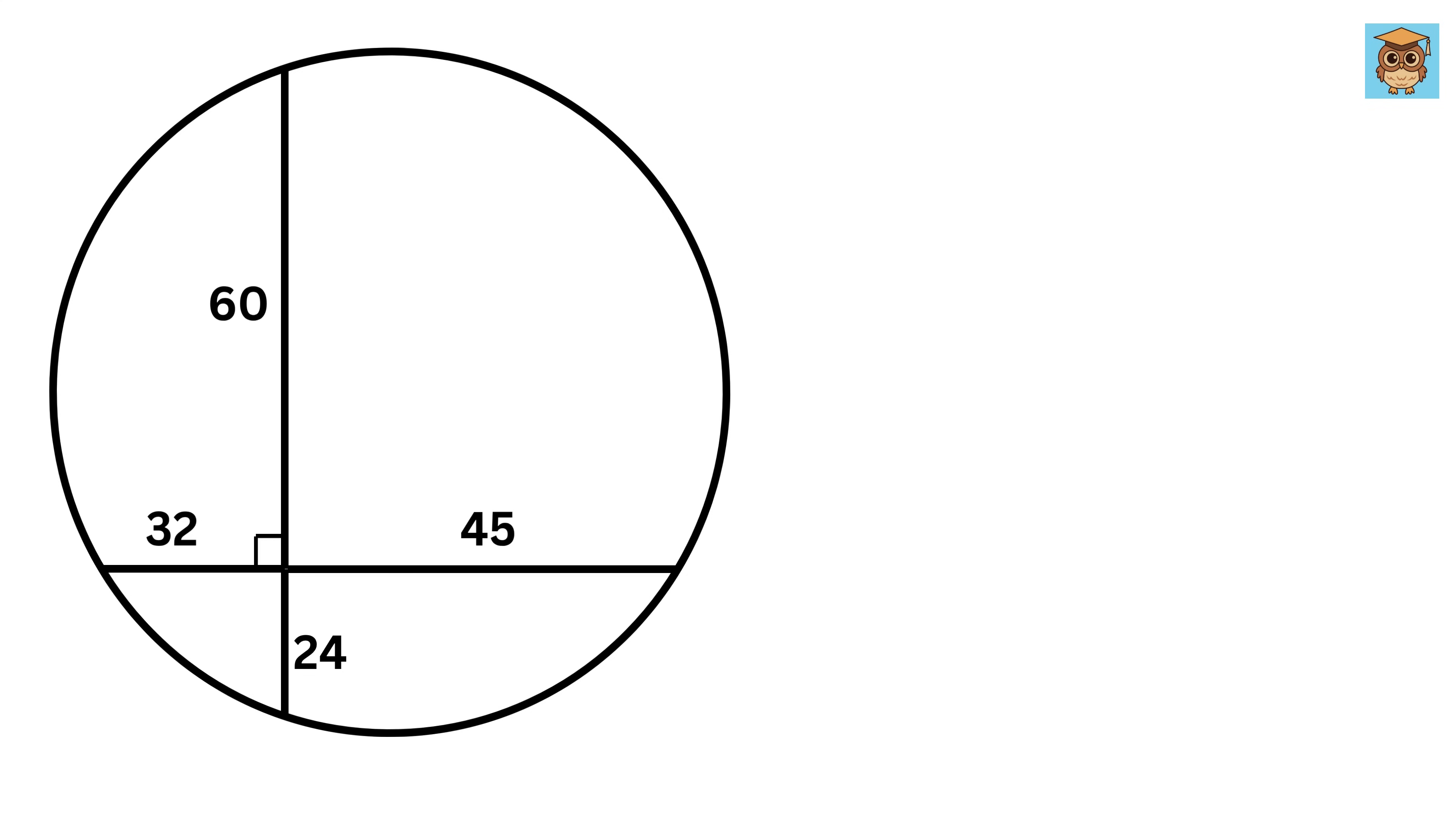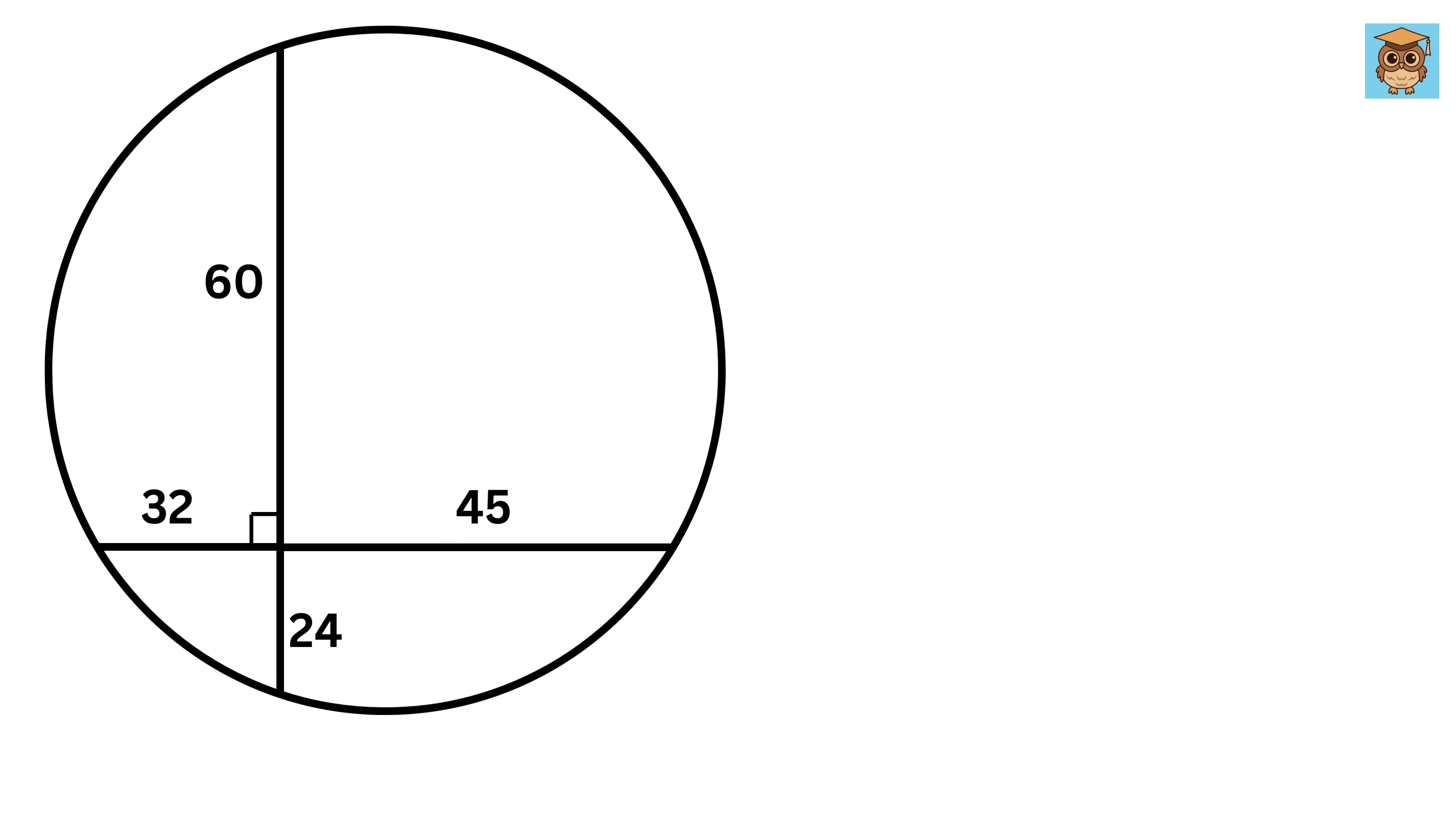Now we will make this solution super simple by assuming the coordinates of this point as zero comma zero with x-axis here and y-axis here. Also, let us assume we have our center of the circle somewhere here. We do not know its location, so we will label it as P comma Q.